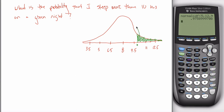The lower bound is 10, but now there's no upper bound. The solution is to trick your calculator: just put in a large number. If you ask what's the probability of sleeping between 10 and 999 hours, it's basically the same as more than 10. I typically put in a bunch of nines; you can also use scientific notation. It doesn't matter — any large number way out to the right works fine. Then the center is 8 and the spread is 1.5.